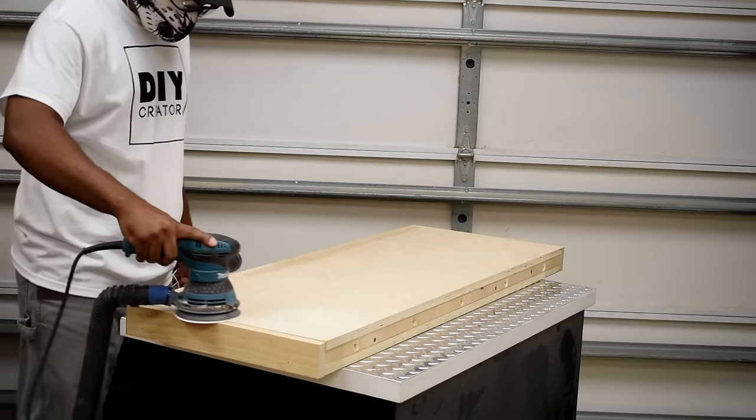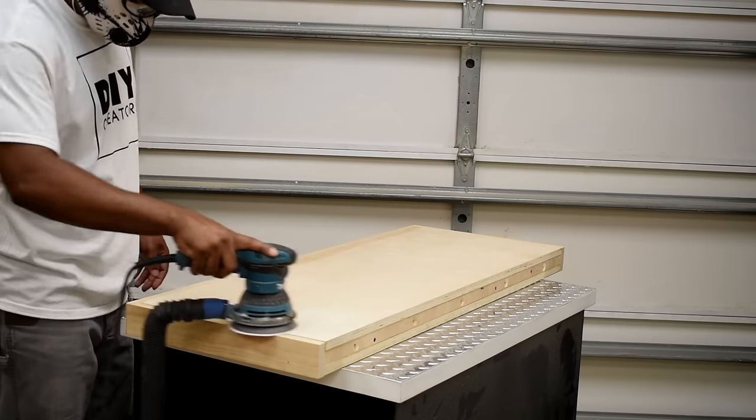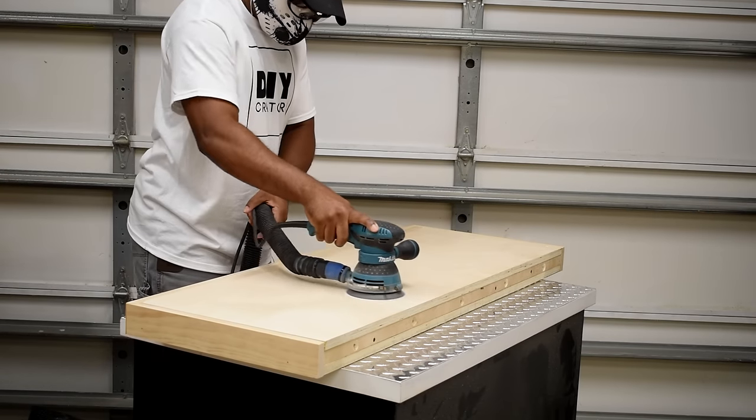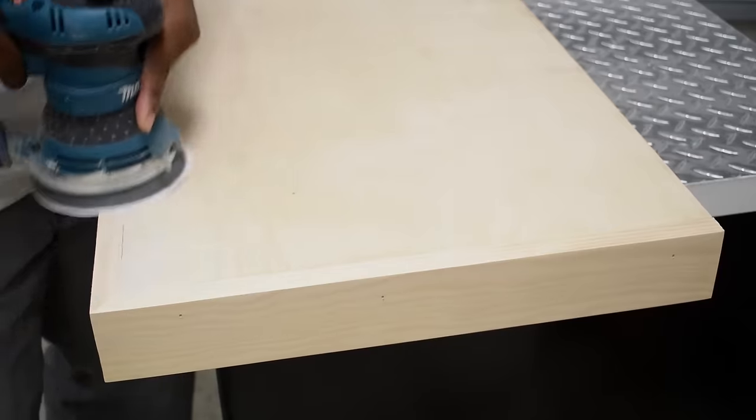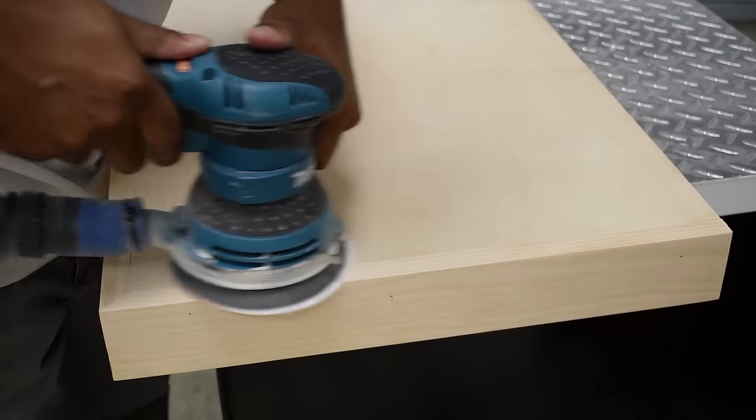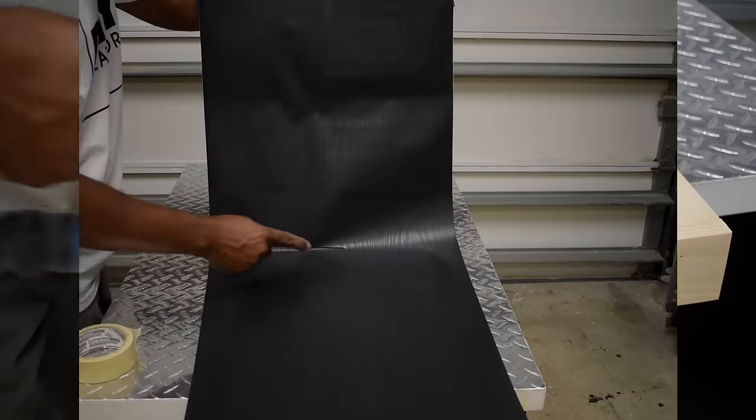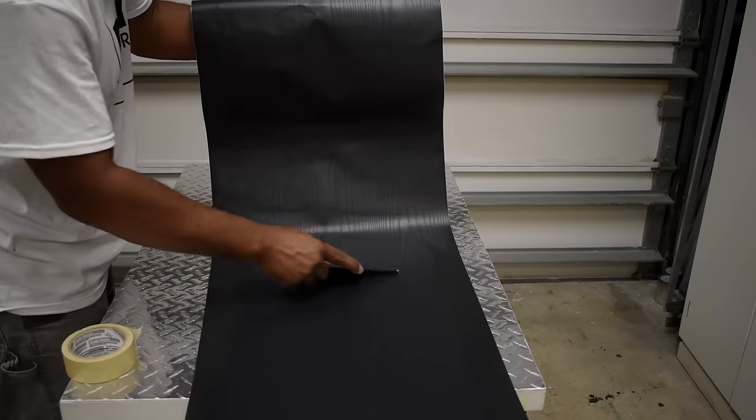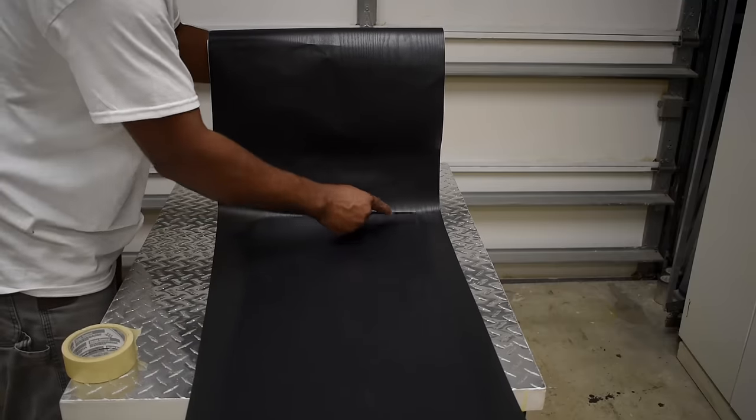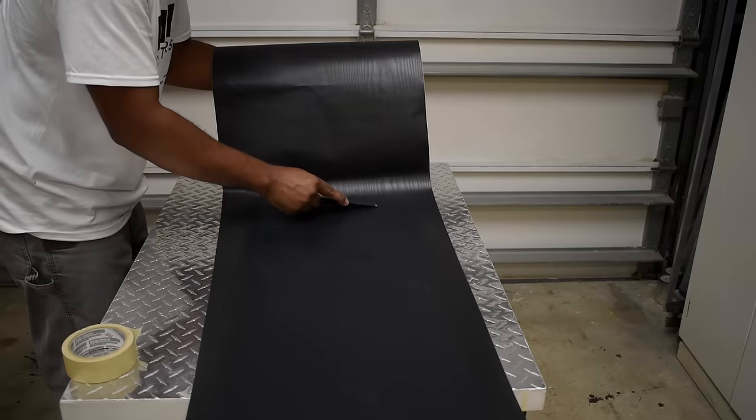I sanded the entire desk down to get it prepped up for applying my finish. It was around this time where I decided that I didn't want to paint it and I wanted to try something new by wrapping it with vinyl. I already had this on hand because it was for another project. Prior to this project, I'd never used vinyl before, so I was a bit nervous on what I was going to run into.